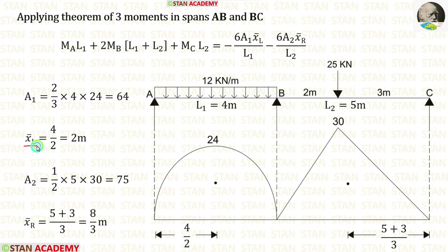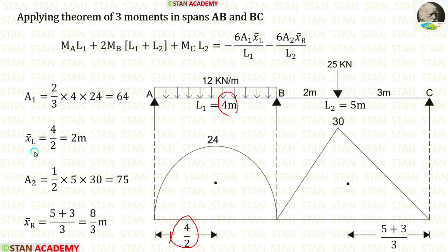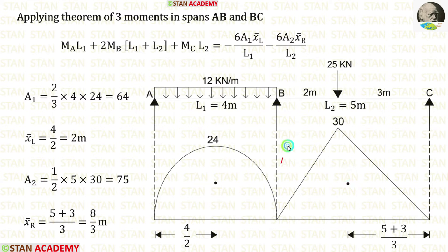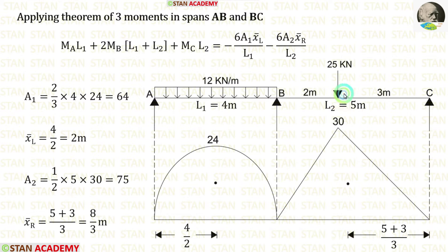Now let us calculate x̄ left. This is a symmetrical diagram, so we can easily find the centroid distance to the left: 4/2 = 2 m. Now let us calculate area 2. This is a triangle, and the area formula is ½ × breadth × height. Here breadth is 5 m and height is 30. Applying the values, we get area 2 = 75.